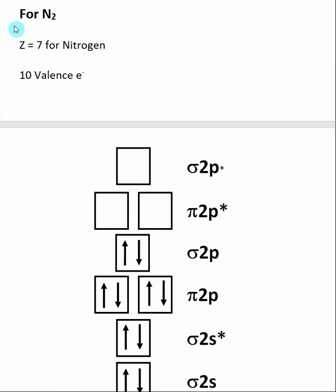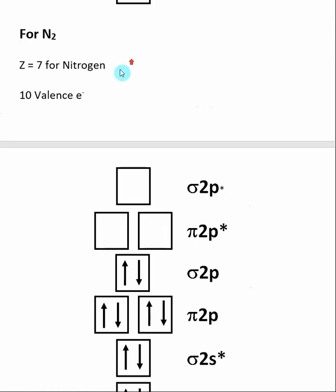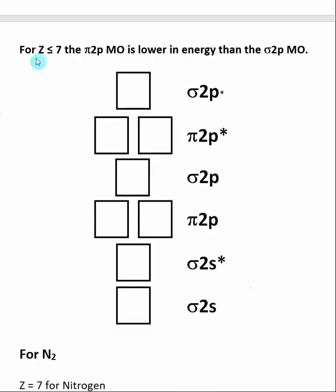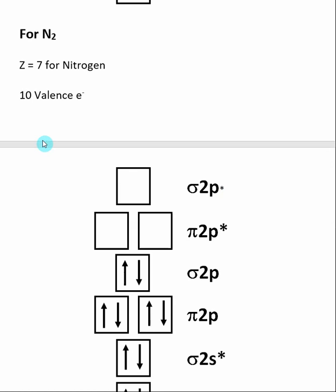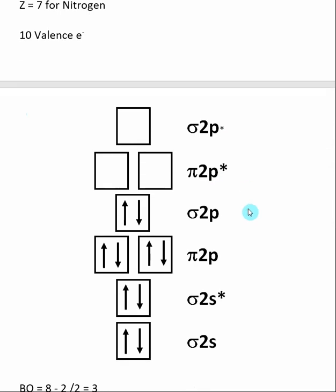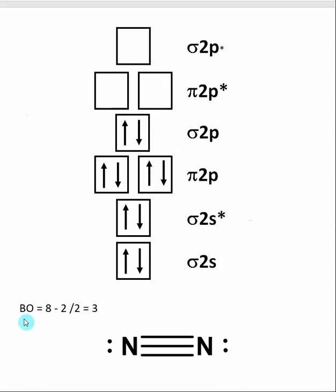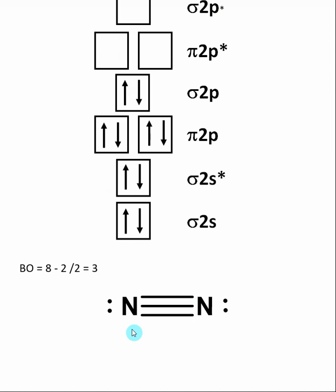When we look at the molecular orbital diagram for N2, nitrogen has a Z value equal to 7, so it matches the condition that Z must be less than or equal to 7. Each nitrogen has 5 valence electrons, so N2 has 10 valence electrons total. We put those 10 valence electrons into the molecular orbital diagram and calculate the bond order: there are 8 electrons in bonding molecular orbitals and 2 electrons in antibonding molecular orbitals. Taking 8 minus 2 and dividing by 2 gives a bond order of 3, which matches the Lewis structure showing an N≡N triple bond.